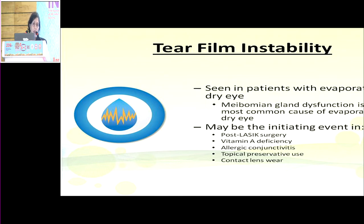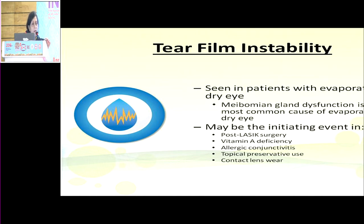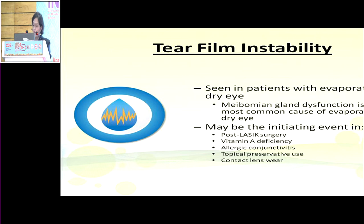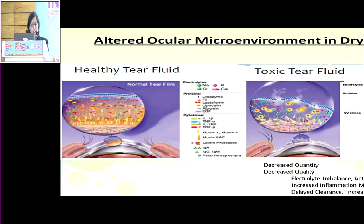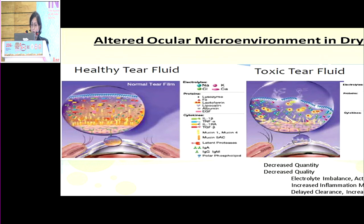We may be prescribing contact lenses or using chronic preservative-laden medications — for example, uveitis patients putting steroids every minute for five minutes, then every 15 minutes, and so on — resulting in a huge preservative load. Glaucoma patients on chronic medications are similarly at risk. Even after cataract surgery, dry eye can be precipitated. In summary: there is an inflammatory cocktail floating in the tear fluid — a toxic tear fluid with decreased quantity, decreased quality, delayed clearance, and increased residence time.